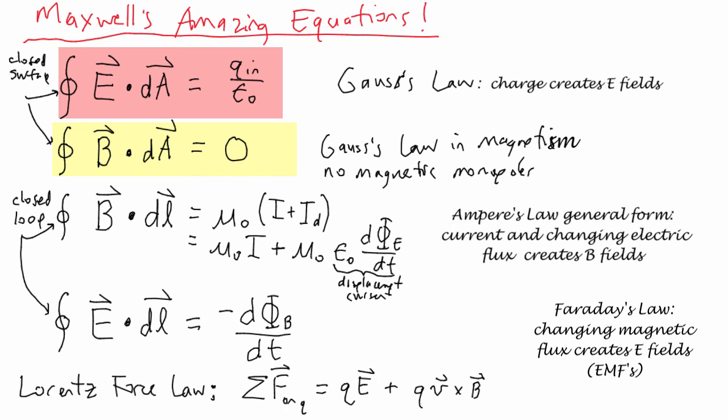If magnetic field lines go out of it, they must come back in. Ampere's law general form describes how current and changing electric flux creates magnetic fields. And Faraday's law describes how changing magnetic flux creates E fields or EMFs. Add that to the Lorentz Force Law, you have a complete description of everything we know about electricity and magnetism. It all fits on this page.